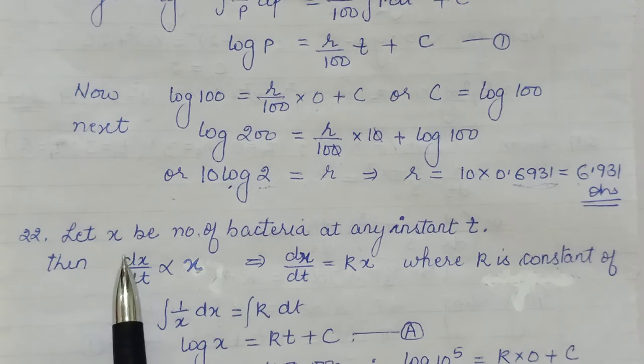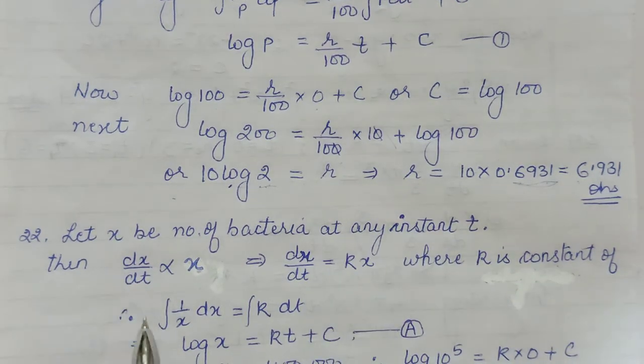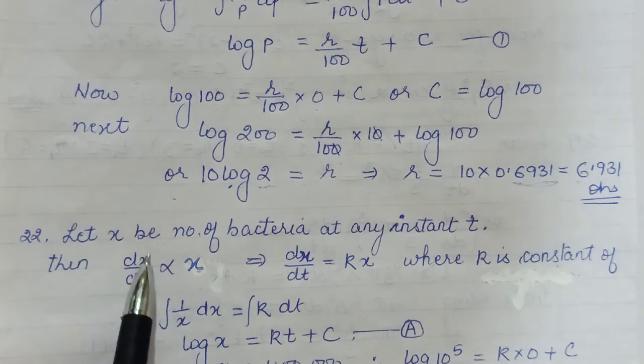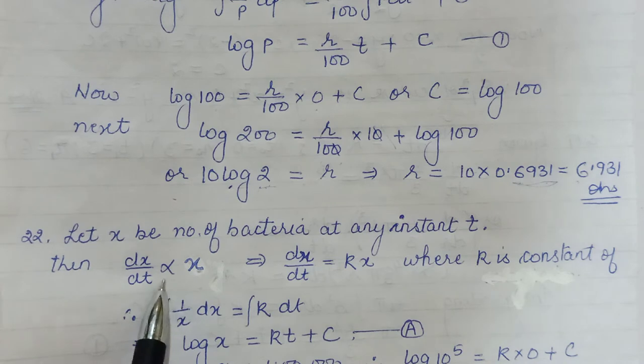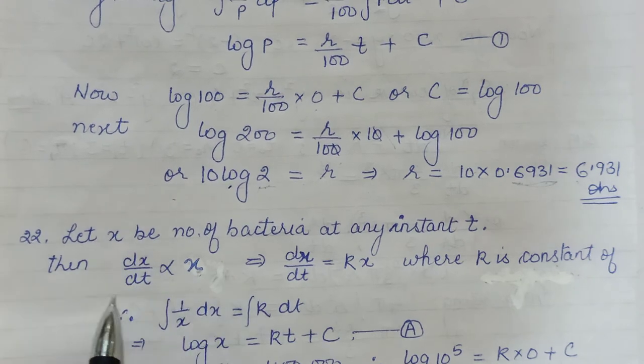The rate of growth of bacteria is proportional to the number of bacteria. So if suppose I say that x denotes the number of bacteria at any instant t or at any time t, then the rate of increase of bacteria, that is dx/dt, is said to be proportional to number of bacteria. So number of bacteria we have said is x. So this is what is given to you.